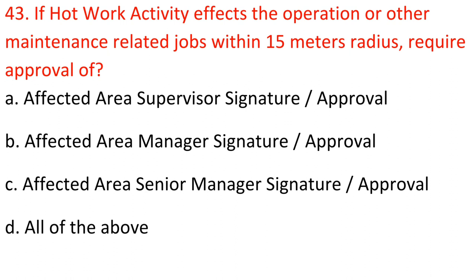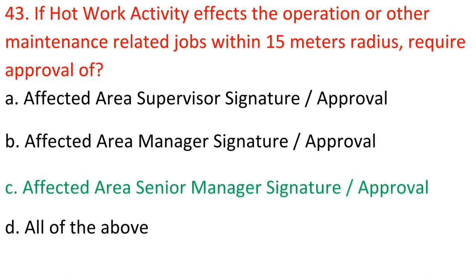Question 43: If hot work activity affects the operation or other maintenance-related jobs within a 15-meter radius, it requires the approval of: A. Affected area supervisor signature. B. Affected area manager signature. C. Affected area senior manager signature and approval. Answer: C. Affected area senior manager signature and approval.